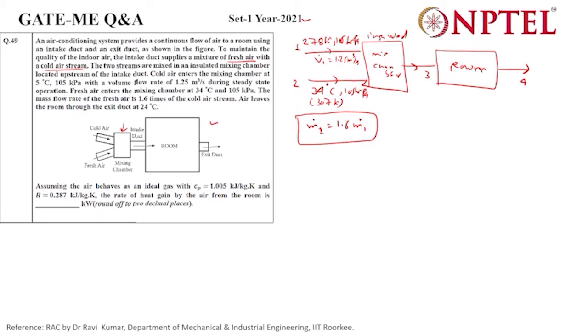Now we will first find the mass using ideal gas equation. PV equals mRT will be applied. P is 105, V is given as 1.25, we have to find m1 dot, R is 0.287, and T is already given as 278.